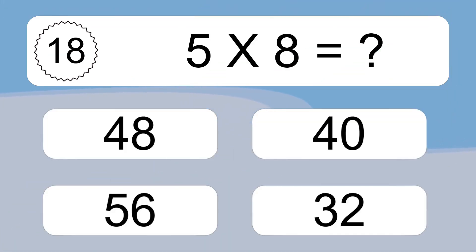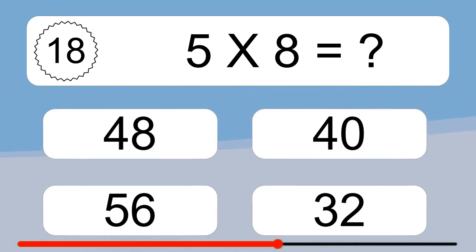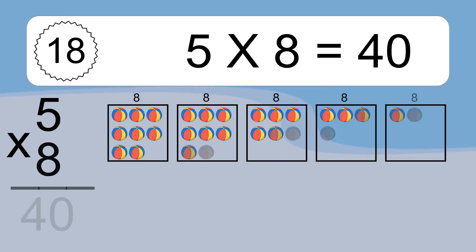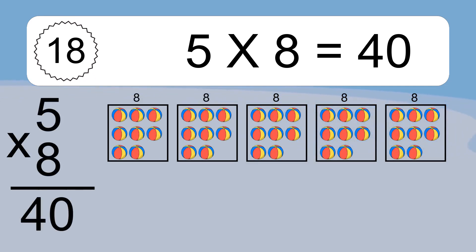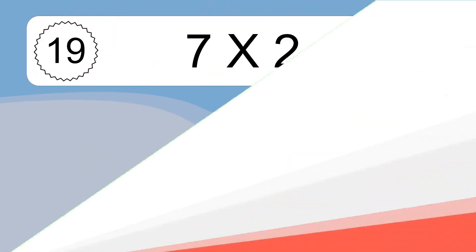Five times eight equals what? Five times eight equals forty. We have five boxes, and each box has eight colorful balls inside. If you count all the balls in all the boxes together, you will have five times eight balls. This equals forty balls.